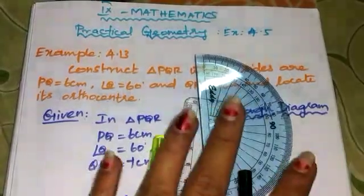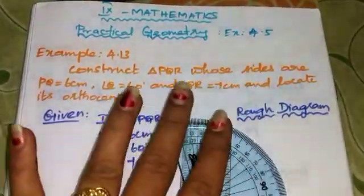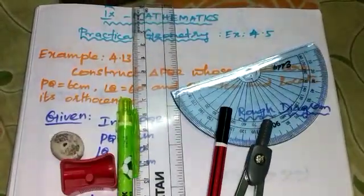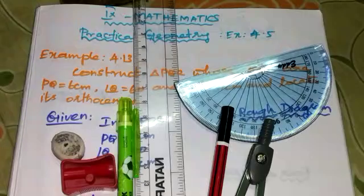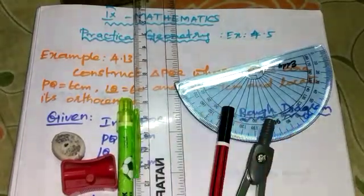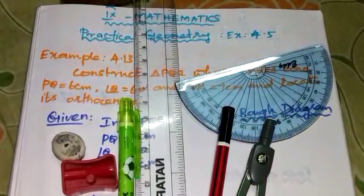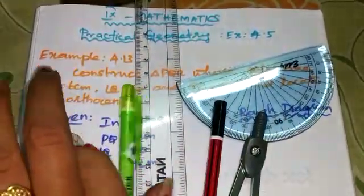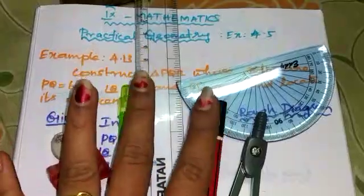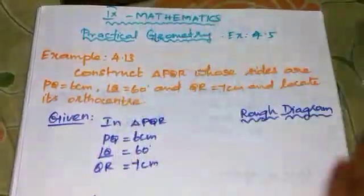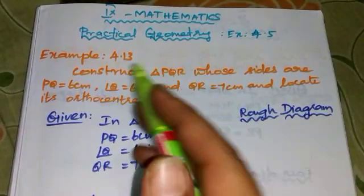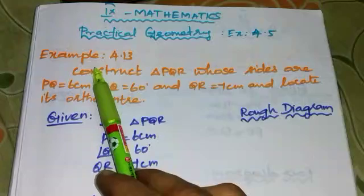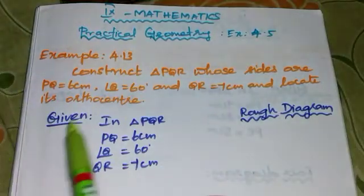Hello students. In the 9th mathematics class, practical geometry — we need to write the things properly and answer the question. We need a pencil and a scale and protractor. Now we need to write the sums: Exercise 4.5, Example 4.13.